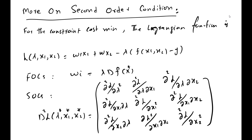Let's see how we can use the second order condition to decide about the maximization or minimization of a particular economic function. Suppose we are interested in the cost minimization function, using two factor inputs x1 and x2. The price of x1 is w1 and the price of x2 is w2, minus the Lagrangian times the constraint f(x1, x2).